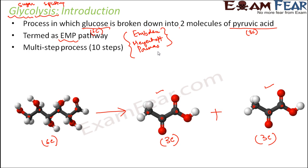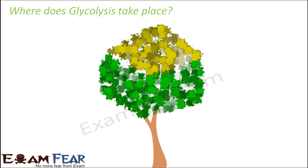Glycolysis is itself a multi-step process — it is made up of 10 steps. So just imagine how many steps are involved in the entire process of respiration. Our job is to understand these 10 steps. First, the question is: where does glycolysis take place?